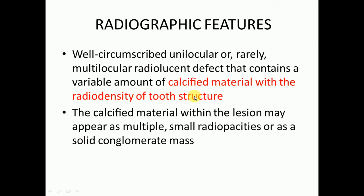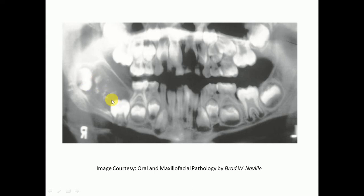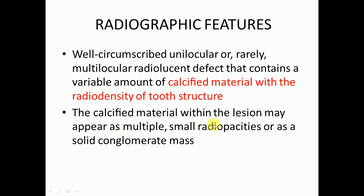In some instances there may be calcified material, and the radio density of that calcified material will be similar to that of tooth structures. This is an OPG — orthopantomogram — showing the radiolucent area at the ramus area of the mandible, with calcified materials whose radio density is similar to that of tooth structures.